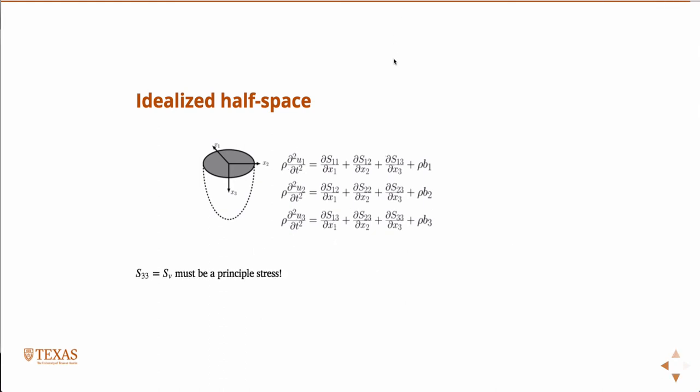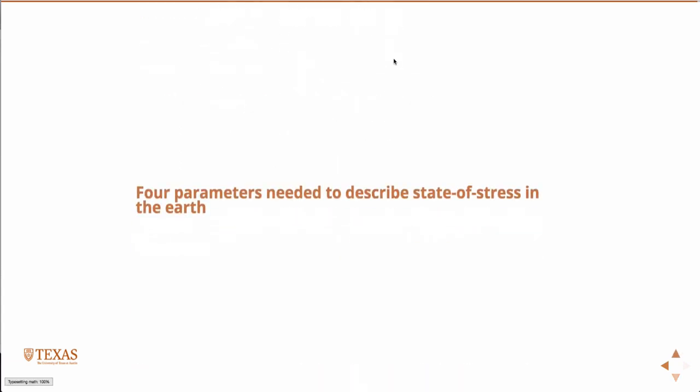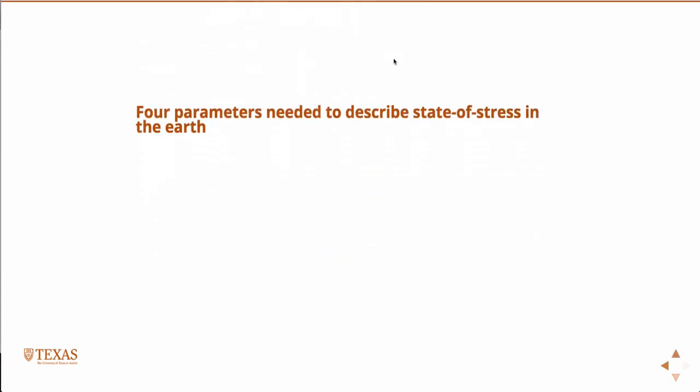So S33 is a principal stress. We often call it the vertical stress, Sv. And so we need four things to describe the state of stress in the earth. The vertical stress of magnitude, which we can estimate. If we have some idea of the density, we can estimate that.